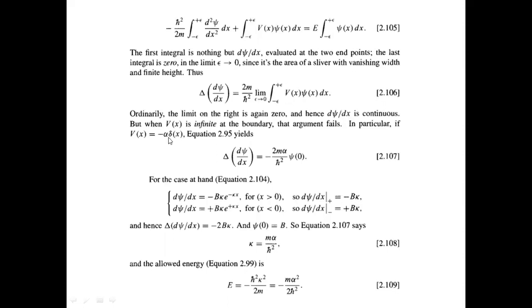We substitute V(x) as the delta function times the height of the potential alpha. Evaluating at the origin where x equals zero, psi(0) gives the value at the origin. This gives us the discontinuity: the first derivative is discontinuous by the amount involving alpha and psi(0). We then use these boundary conditions to find the allowed energy E.